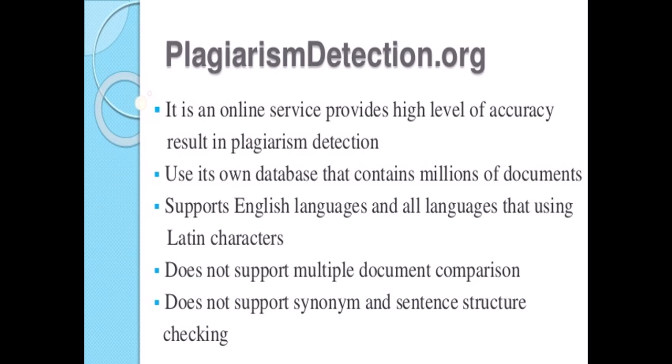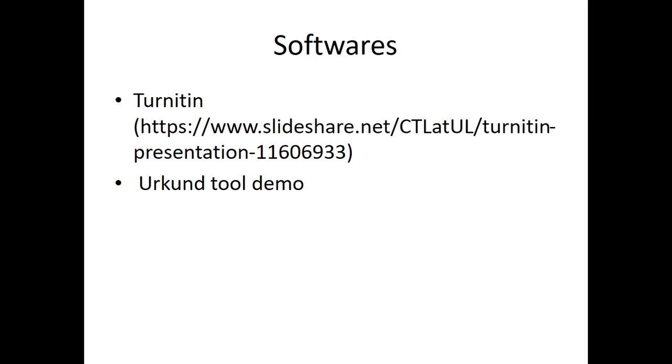PlagiarismDetection.org is an online service that provides a high level of accuracy in plagiarism detection. It has its own database containing millions of documents, and supports the English language as well as all languages using Latin characters. It does not include multiple document comparison and does not support synonymous or sentence structure checking. The software we are most concerned with is Turnitin and the Urkund demo tool.